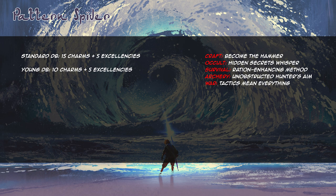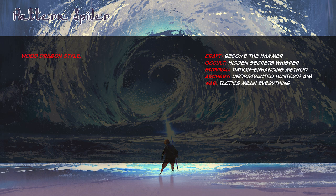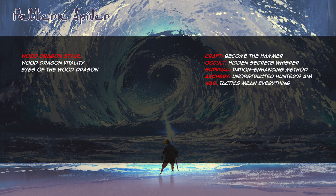Now that we've selected our excellences, it's time to start selecting charms. I'll go straight to Wood Dragon style and see what I can get. I want the form charm when the character is complete, but cannot get that at Essence 1 as a youngster. I'll take the charms I can get: Wood Dragon Vitality, which lets her increase her soak against withering attacks or subtract dice from decisive ones; and Eyes of the Wood Dragon, which lets her add Perception to withering attacks. I only have Perception 2 for now, making me interested in increasing it in the future.